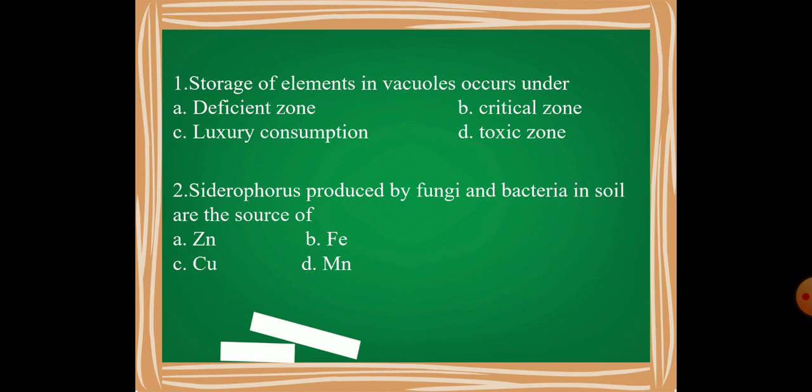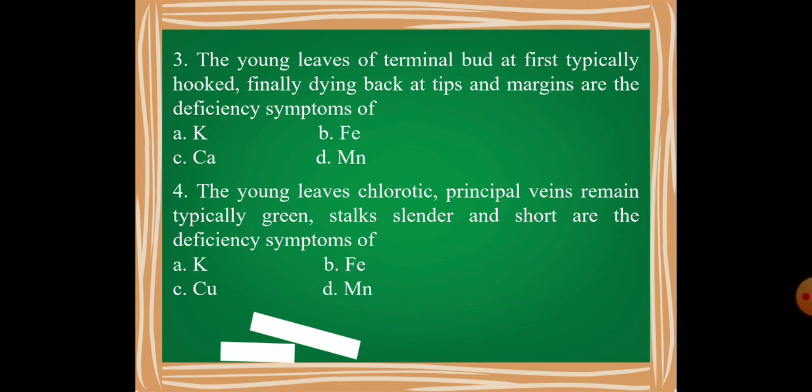Question number three: The young leaves of terminal bud at first typically hooked, finally dying back at tips and margins, are the deficiency symptoms of potassium, iron, calcium, or manganese?